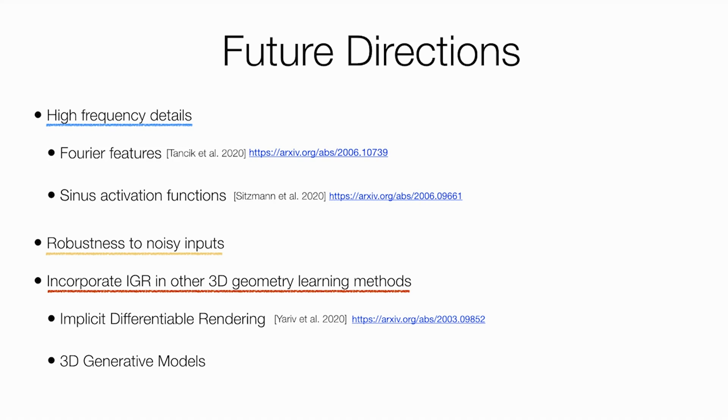For instance, Tancik et al suggests to incorporate Fourier feature vectors at the input of the network, also referred as positional encoding. Sitzmann et al optimized an IGR-like loss with a sinusoidal-activated MLP and report promising results in large-scale scenes.